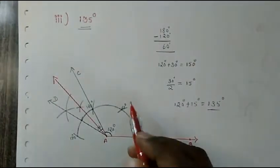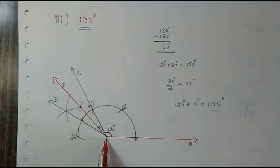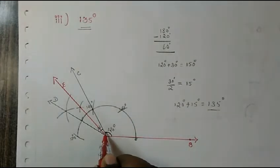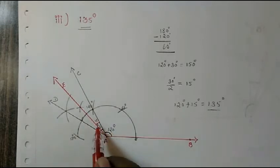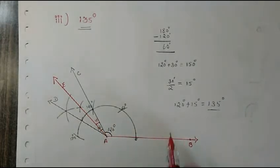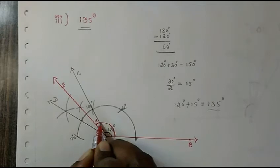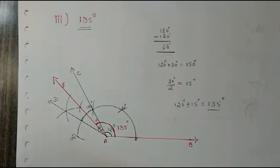This new point is E. So angle EAB together gives us how much? This is 120, and this 30 we have bisected equally in half — so this portion is 15 degrees. Therefore 120 plus 15 gives us 135 degrees.